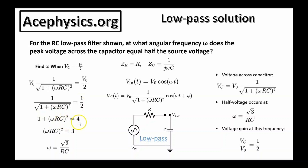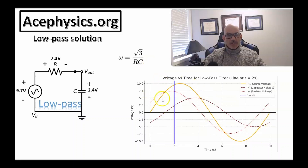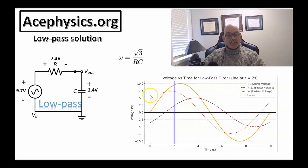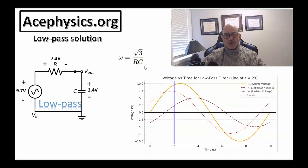We get 1 plus (omega·RC)² equals 4. Subtracting 1 from both sides, (omega·RC)² equals 3. The results for the low-pass filter: when the angular frequency of the driving source equals sqrt(3) over RC, the voltage across the capacitor equals half the voltage of the driving source. On this slide I've plotted the driving source voltage in orange, the resistor voltage as a dotted line, and the capacitor voltage as a dashed line, all at driving frequency sqrt(3)/RC. The capacitor amplitude is half the source amplitude of 10 volts, as we just solved.